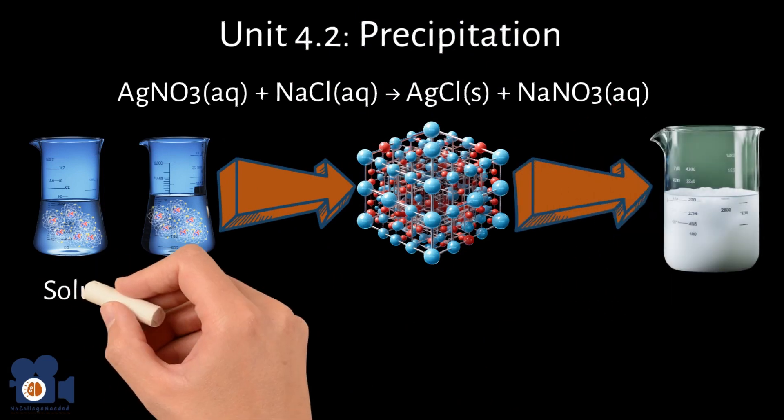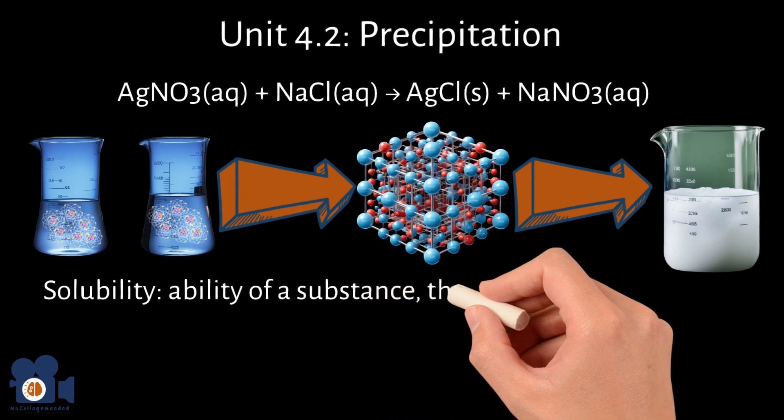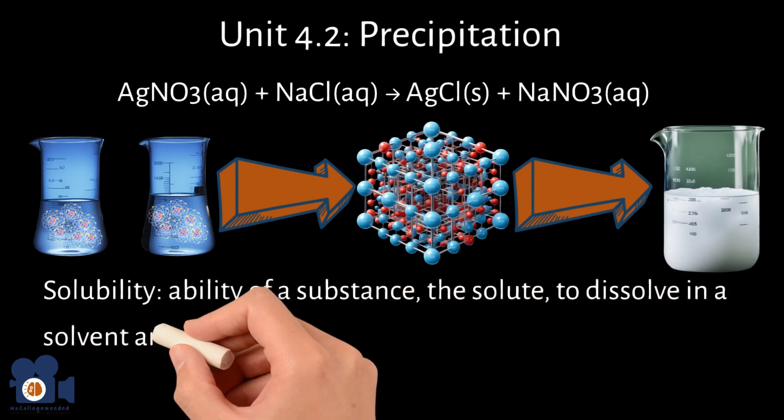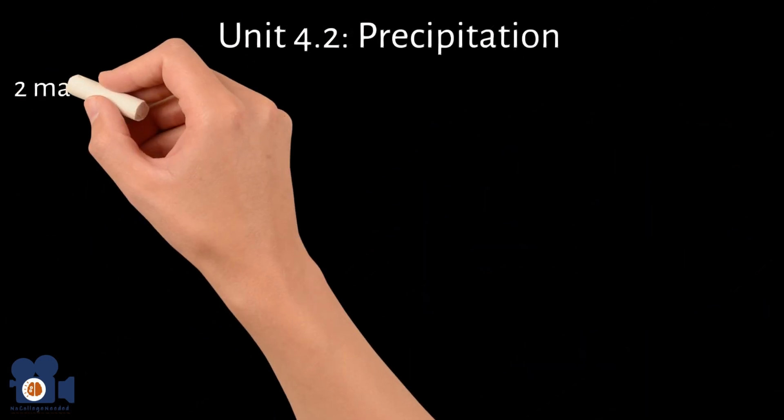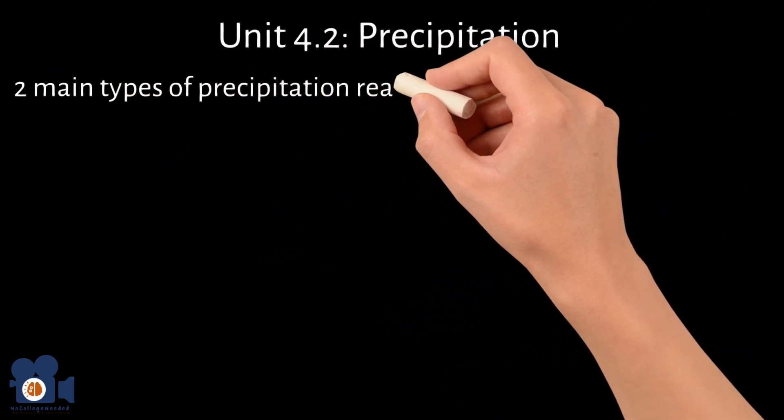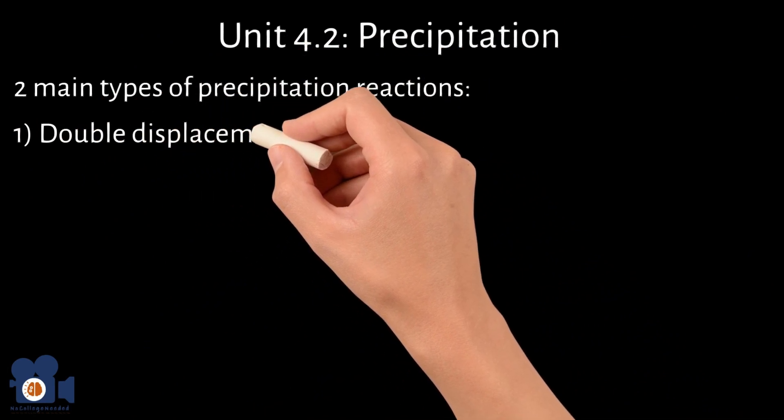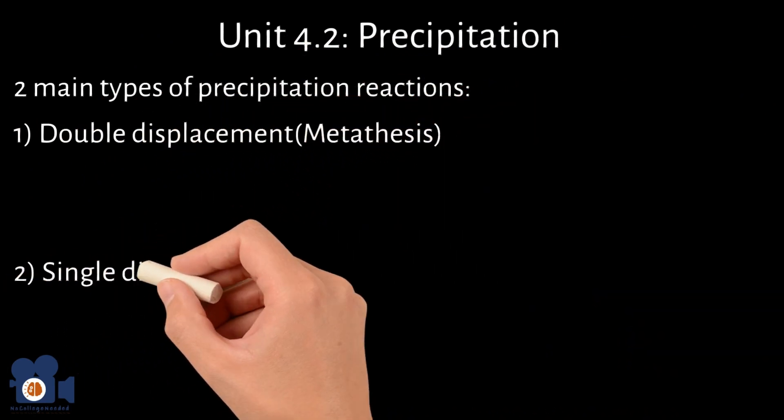As a reminder, solubility is the ability of a substance, the solute, to dissolve in a solvent and form a homogeneous mixture called a solution. There are two main types of precipitation reactions: double displacement, sometimes referred to as metathesis reactions, and single displacement.